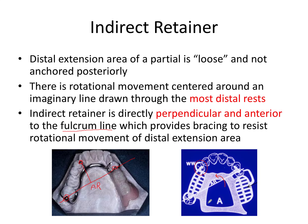The upper arch example is similar in design but has an added bounded edentulous space. The process was very similar: we looked at the most distal rest on each side, drew a line through them called the axis of rotation, noted the arrow symbolizing how the partial would rotate, drew a line perpendicular and anterior to it, and the indirect retainer is a nice cingulum rest on the canine. This is what you should know for the board exam in case you get a question about the indirect retainer.